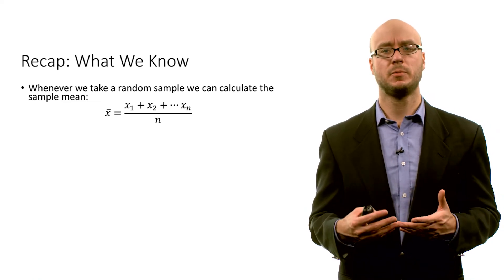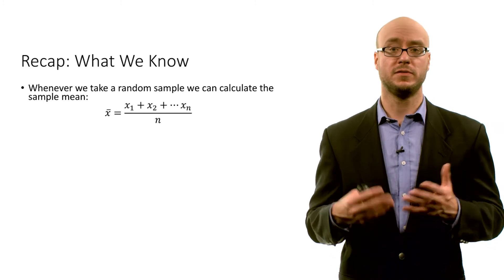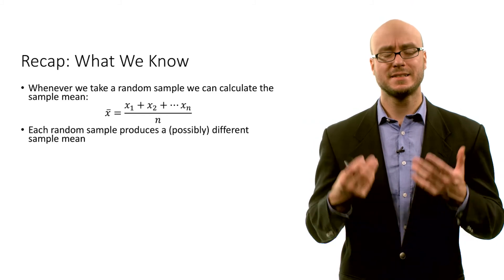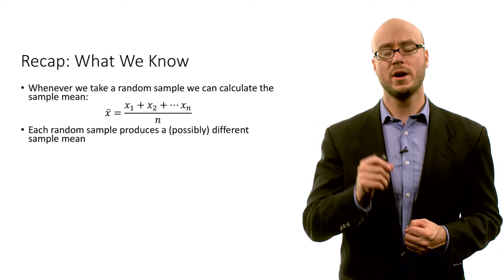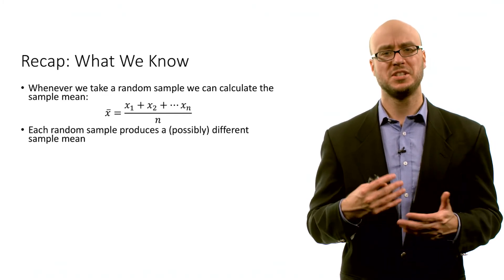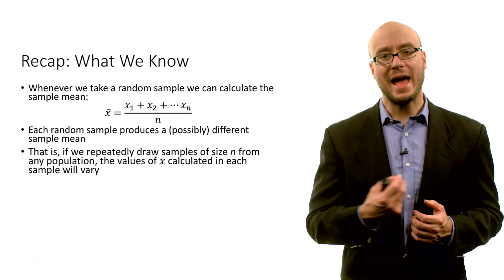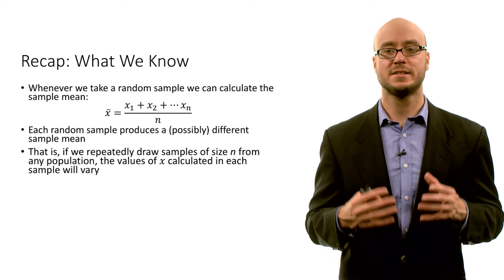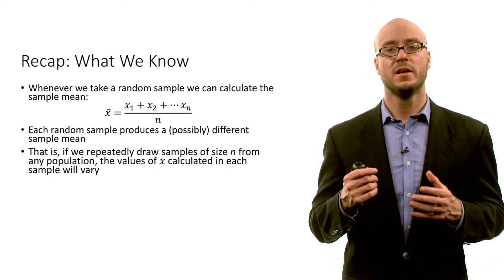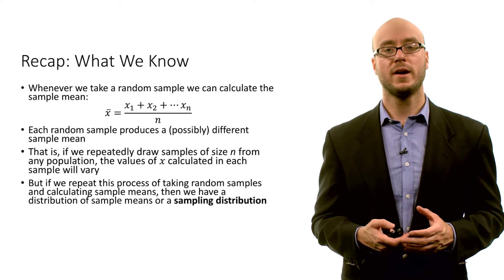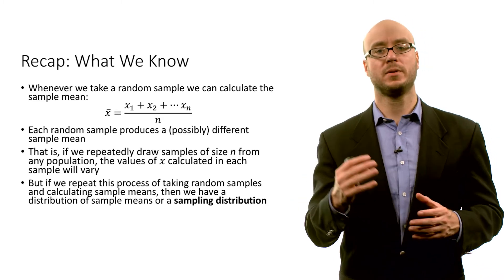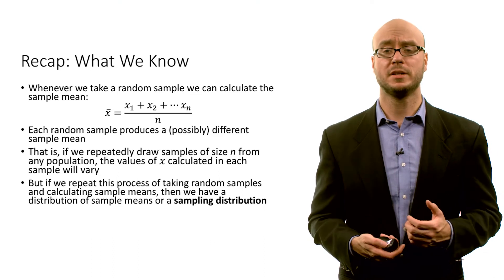To recap what we know about the sampling distribution so far: whenever we take a random sample, we can calculate a particular sample mean x-bar — you just take all the values and divide by the sample size. This is a point estimate for the population mean. Each random sample is going to produce a possibly different sample mean — that is sampling variability. If we repeatedly draw samples of size n from any population, the values calculated in each sample will vary. But if we repeat this process of taking random samples and calculating sample means and create a dot plot, we have a distribution of sample means, or what we call a sampling distribution.